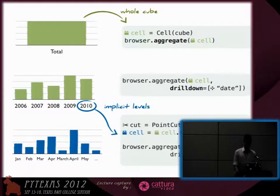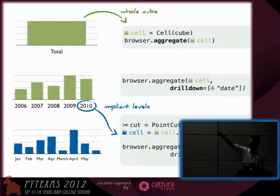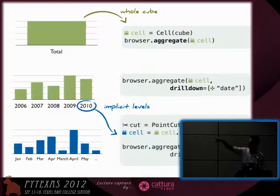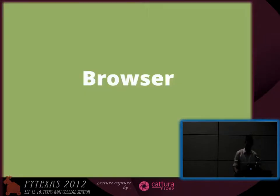Another nice feature of Cubes is implicit discovery of hierarchies. If you already define the hierarchies in the model and you are drilling down, you can see in the examples that I'm using the same aggregate function, because Cubes knows that the next level after year is month. So you automatically get the drill down by month.